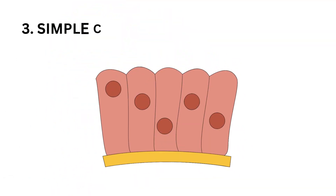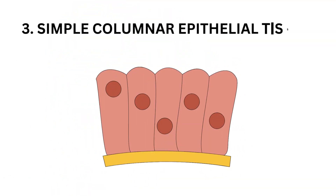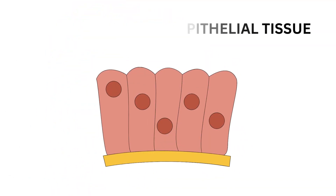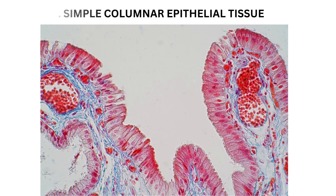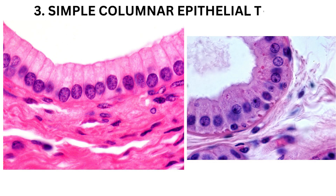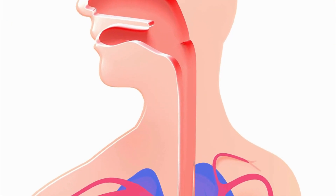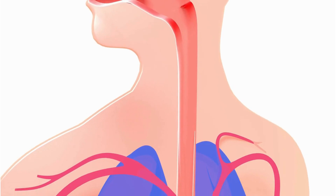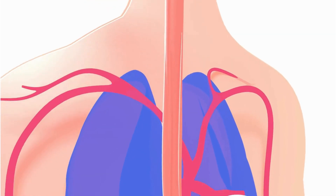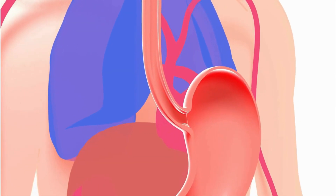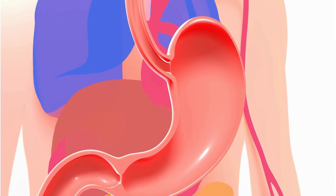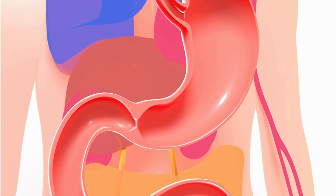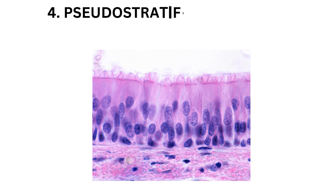Simple columnar epithelium consists of a single layer of tall, column-shaped cells. It is found in the lining of the digestive tract, where absorption and secretion take place.